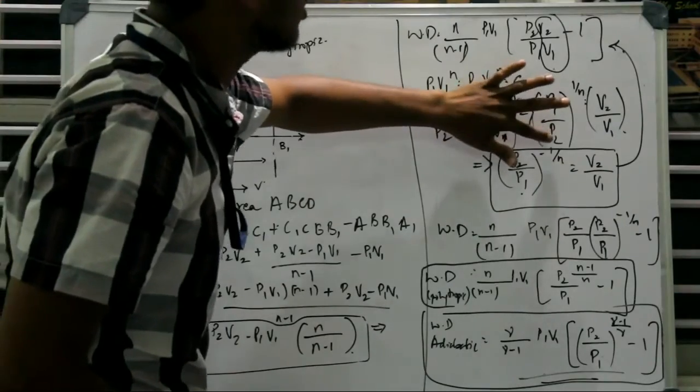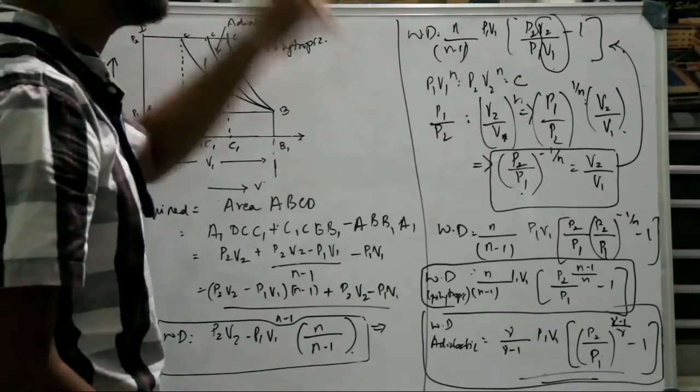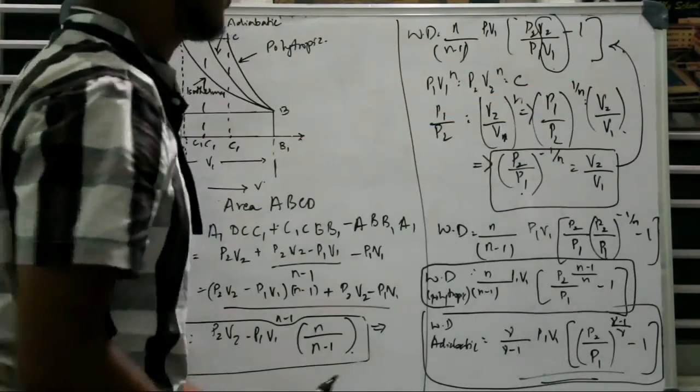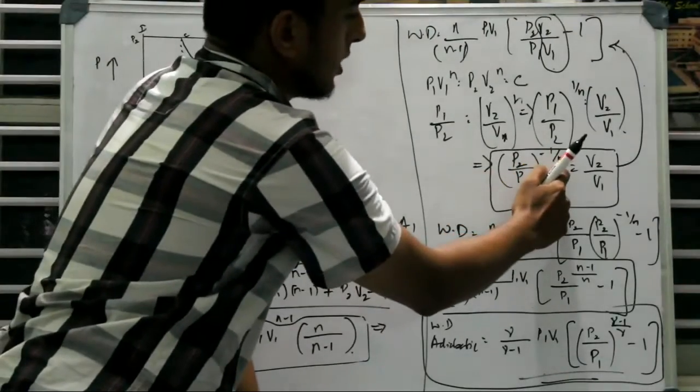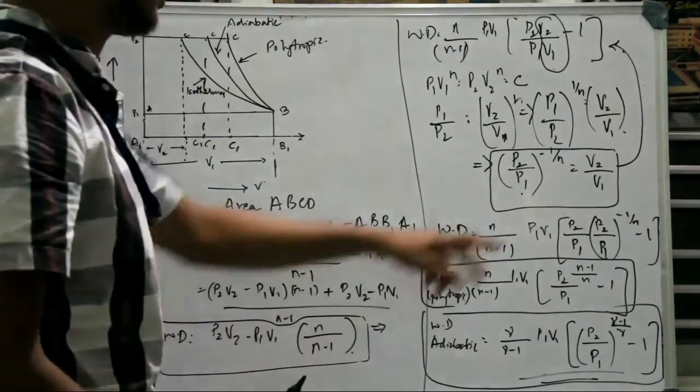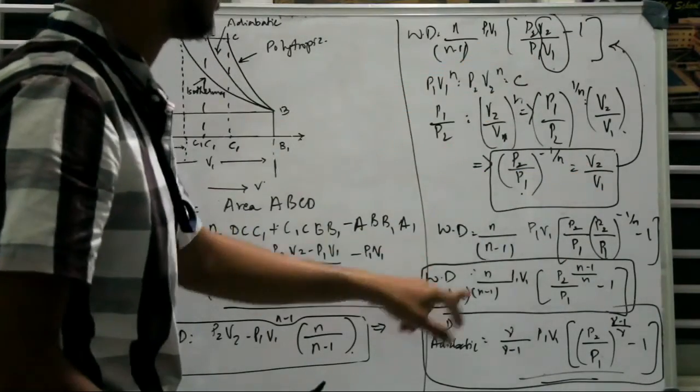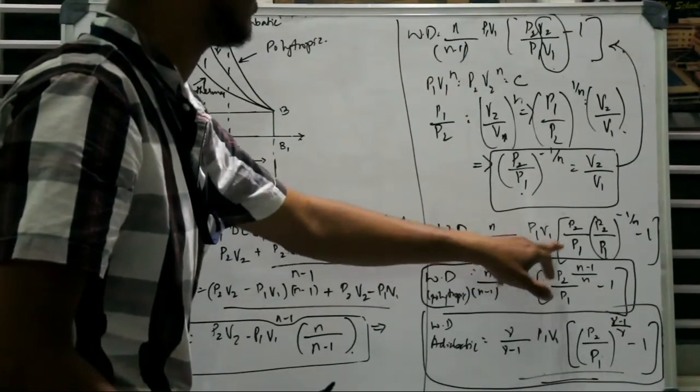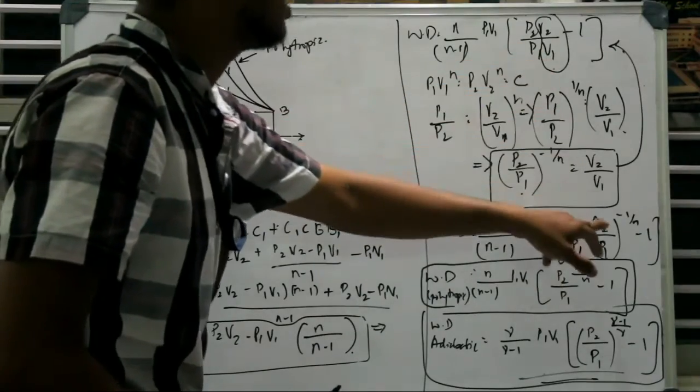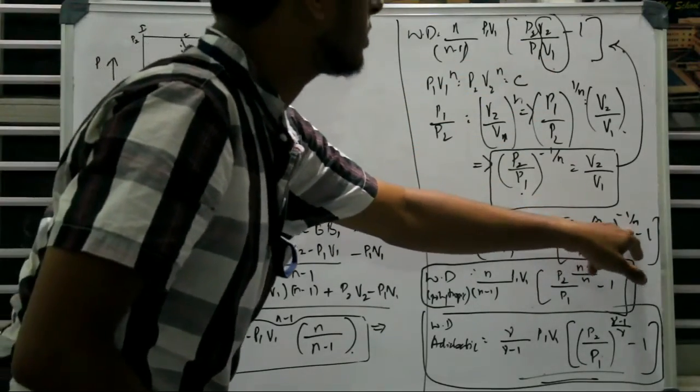When we shift the numerator and the denominator, the sign changes of the power. So P2 by P1 to the power minus 1 by N is going to be V2 by V1. Now when we substitute for V2 by V1 in this expression, we get N by N minus 1 into P1 V1 by P2 by P1 into P2 by P1 to the power minus 1 by N minus 1.